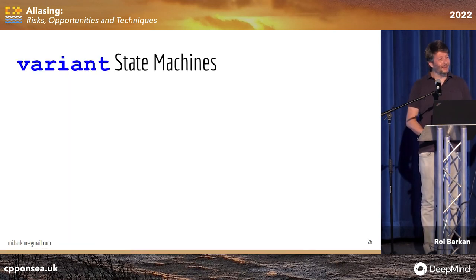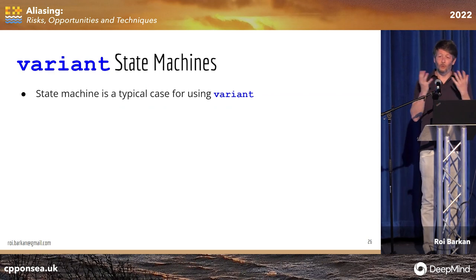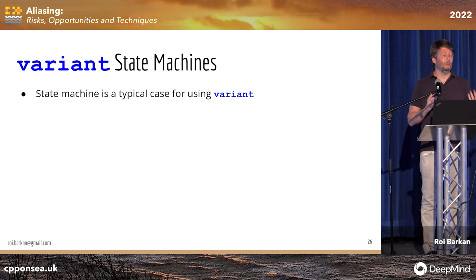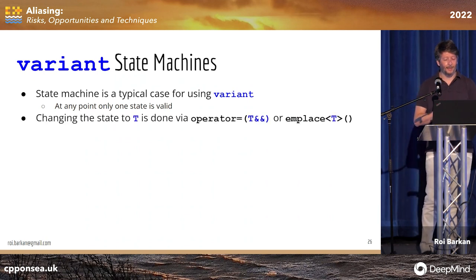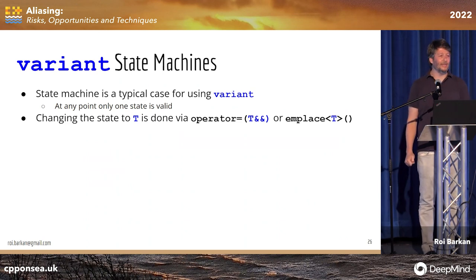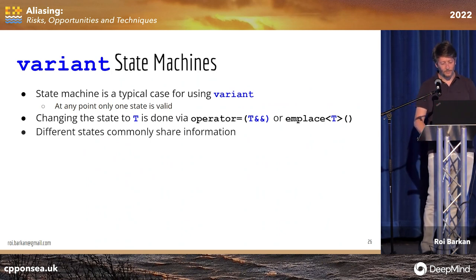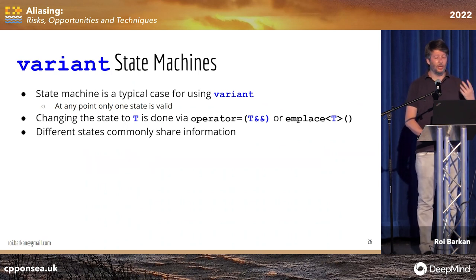Moving from unions to variants, I want to give one more motivating example about state machines. State machines are a typical use case for variants, where we have a single memory location that changes state over time and only one state is valid at any point. The way to change a variant's type is using its conversion assignment operator or the emplace function. The observation is that different states are often quite similar — they share information, and when converting from one state to another, we want to keep some state intact.